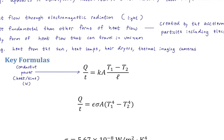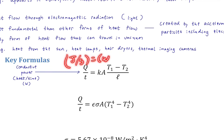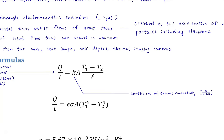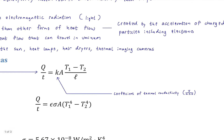The conduction formula gives conductive power — Q over T — measured in watts (joules per second). It equals K times A times (T1 minus T2) divided by L. K is the coefficient of thermal conductivity: the material-specific constant that tells you how easily energy flows through something via conduction. A is the cross-sectional area in contact with the heat source.